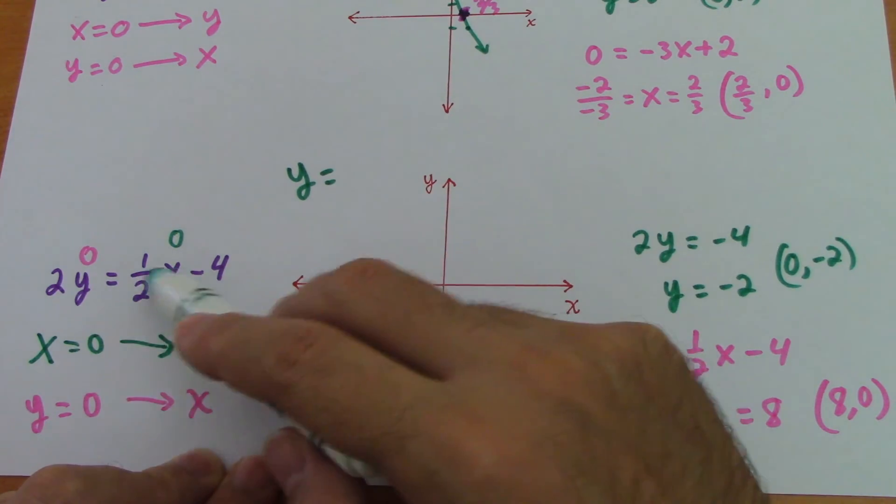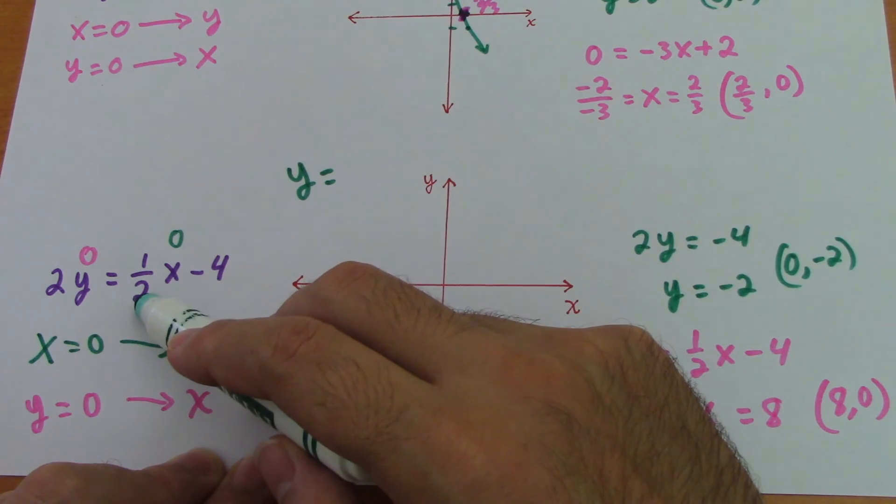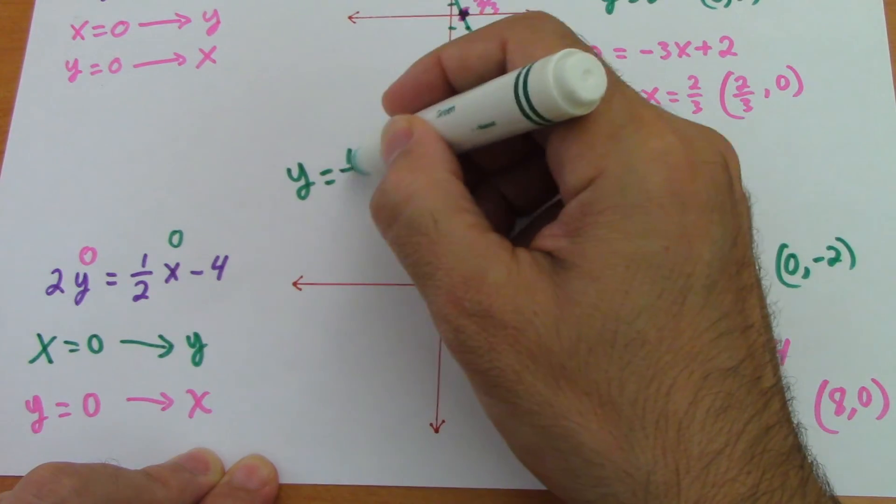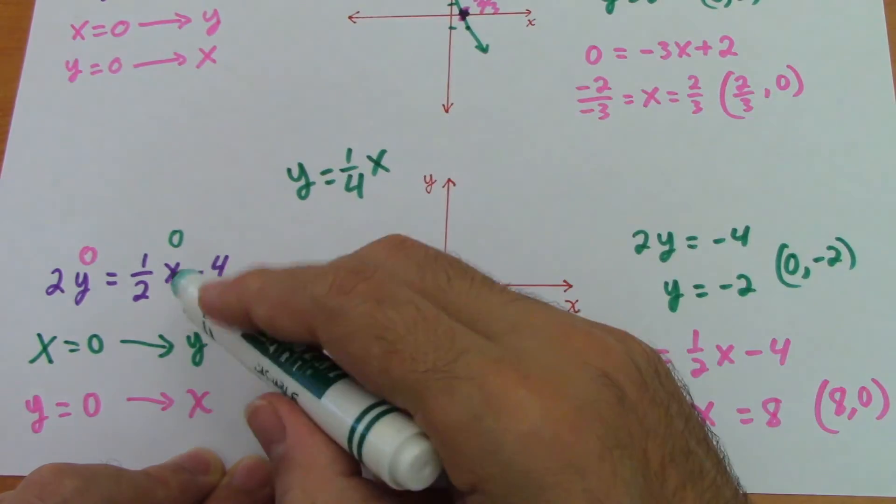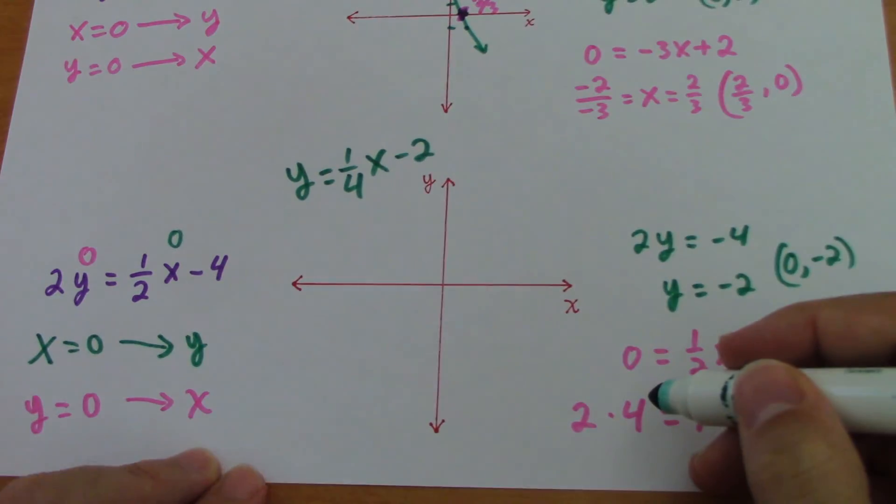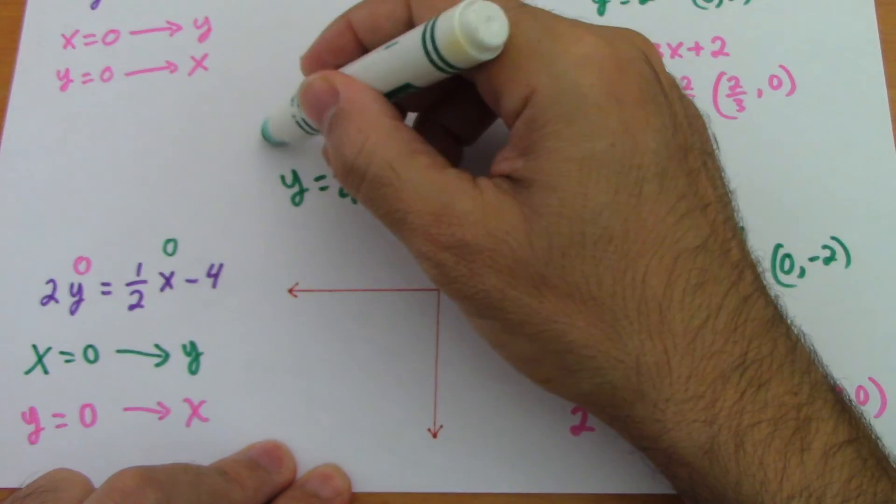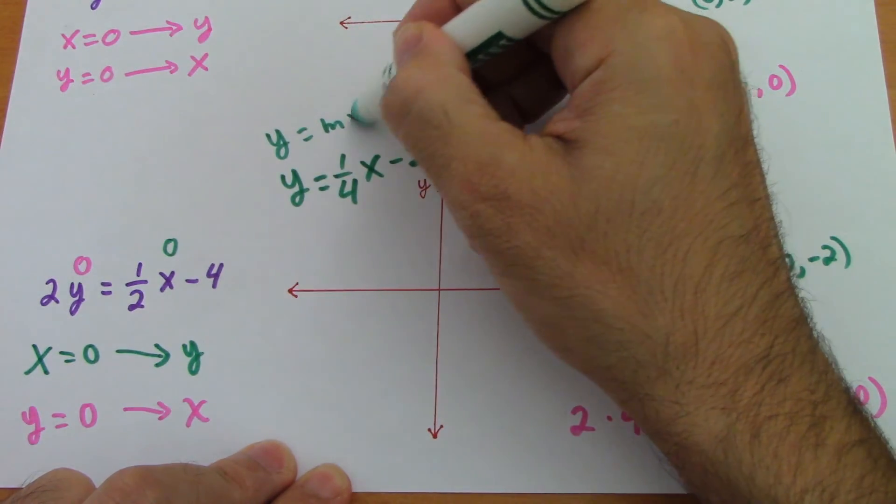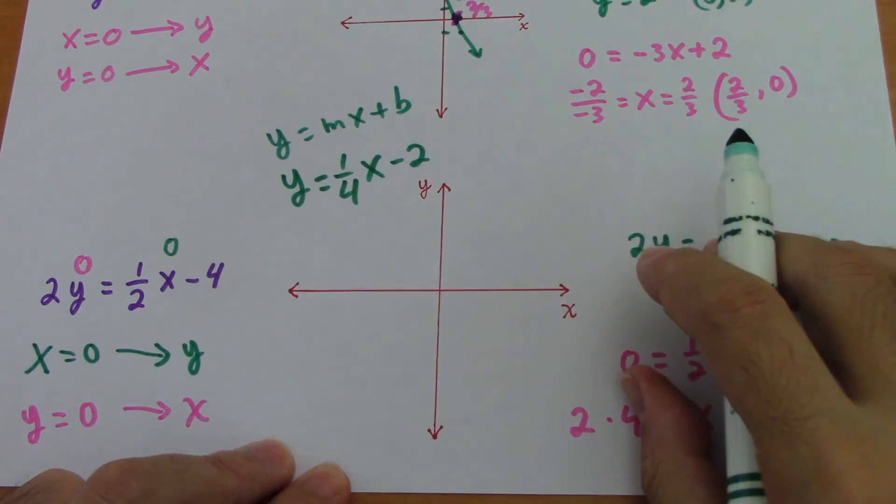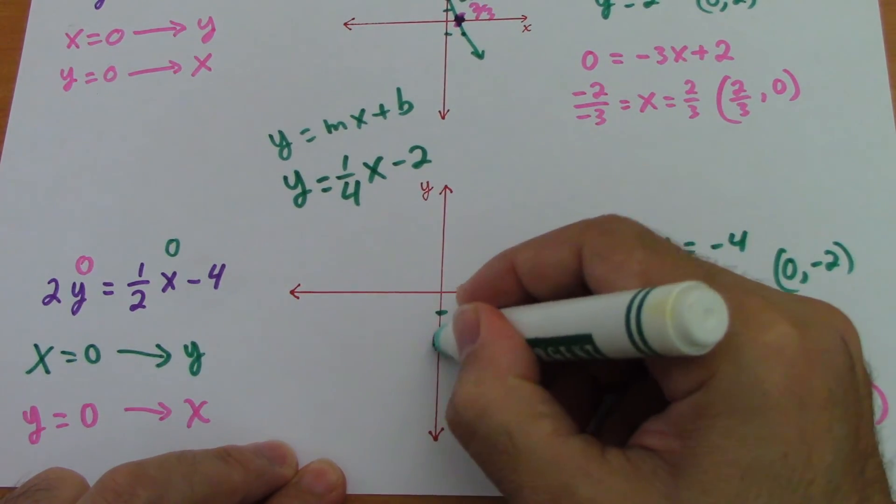This 2, I have to divide it, everything here divided by 2. 1 half divided by 2 is 1 fourth, 1 fourth of x, and negative 4 divided by 2 is negative 2 minus 2. That's the equation in slope intercept form. Remember the general formula is mx plus b. Negative 2, negative 1, negative 2, here it is.